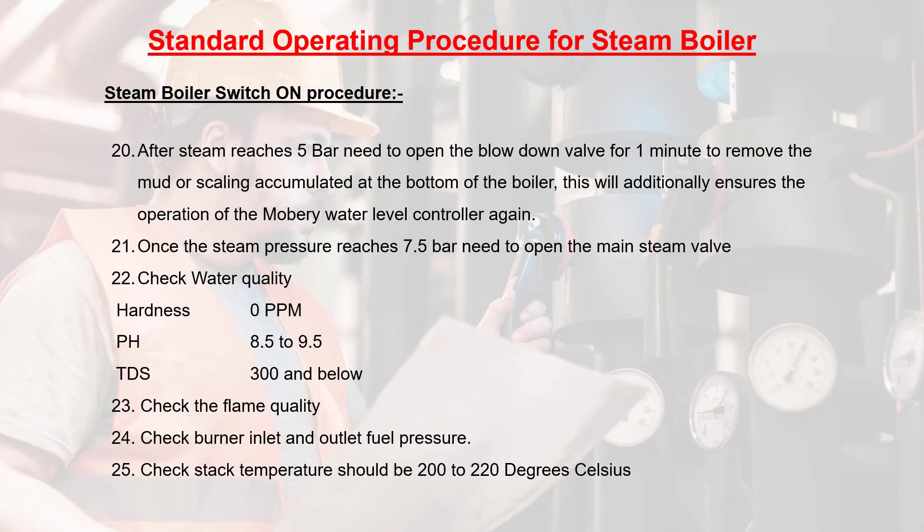Step 20: after steam reaches 5 bar, open the blowdown valve for 1 minute to remove mud or scaling accumulated at the bottom of the boiler. This will additionally ensure the operation of the Mowbray water level controller. Step 21: once the steam pressure reaches 7.5 bar, open the main steam valve.